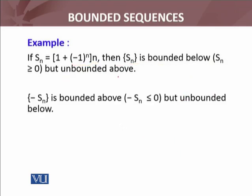Similarly, the next example: if we take the negative of the previous sequence, we get a sequence that is bounded above by 0, since the roles are reversed. But it is unbounded below — there does not exist any real number such that S_N is greater than or equal to that real number for all N.